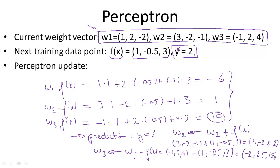If you compute the inner product of the new w3 with feature vector f(x), you'll see it's lower than ten. And if you compute the inner product of the new w2 with f(x), you'll see that it's higher than one.